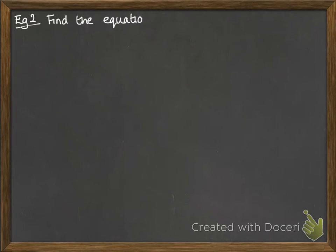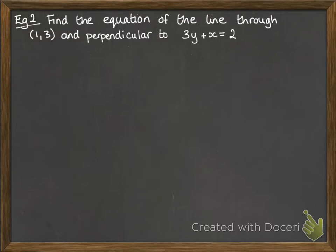Okay, another example. Find the equation of the line through the point 1, 3, and perpendicular to the line 3y plus x equals 2. This is a good point to talk about the fact that we don't need to write straight lines always in the form of y equals mx plus c. You can write them as the y plus x components equal to a constant, or you can have it as the y and the x and the constant equal to 0.